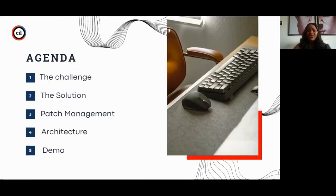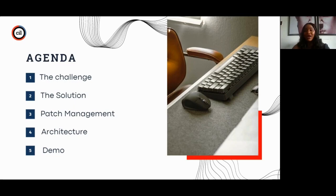Today we're looking at the challenge — we've identified a problem and we're looking for ways to solve it. After looking at the challenge, we'll look at the solutions outlined in this program. We're also going to be looking at patch management, which is part of AWS Systems Manager, and we'll look at architecture and a demo. To continue, I'll be bringing in John Toriola, our distinguished cloud engineer here at Secure Intelligence Limited, who will take us through what to expect for the rest of the program.